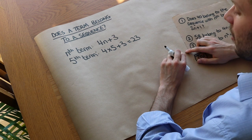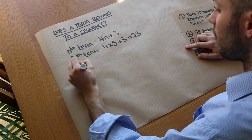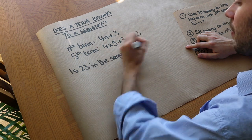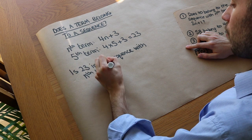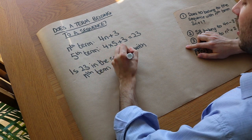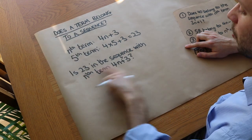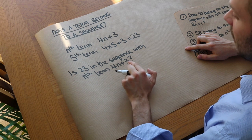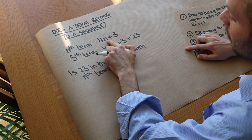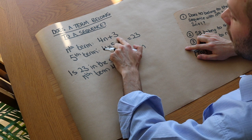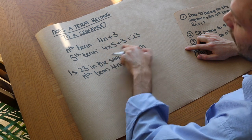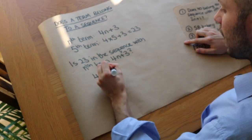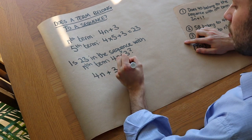But sometimes we might want to do the opposite. We might want to ask: is 23 in the sequence with nth term 4n plus 3? We know the answer is yes, but if we didn't know, how would we work this out? If 23 is in the sequence, there would be some n such that 4 times that n plus 3 gives us 23.